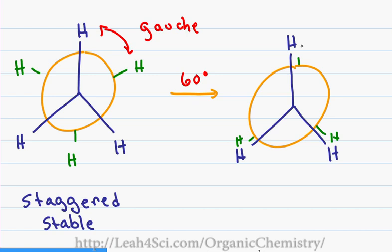This is considered the eclipsed conformation because the forward hydrogens directly eclipse the rear hydrogens. This is an unfavorable conformation because the atoms are too close to each other. When atoms get too close, you have a high energy and unstable molecule.